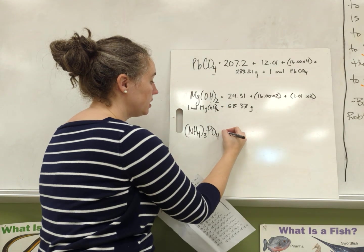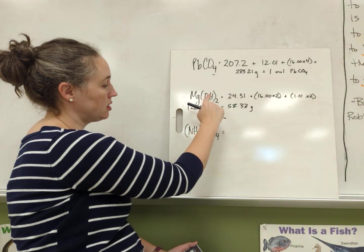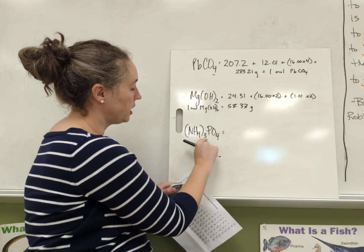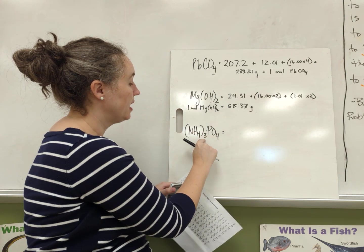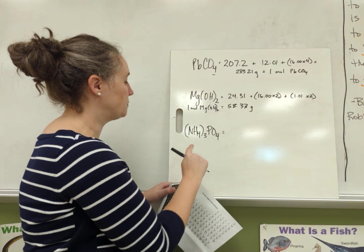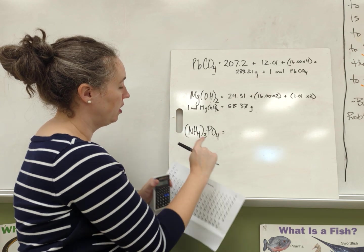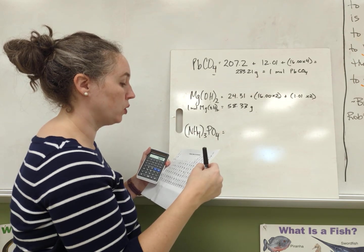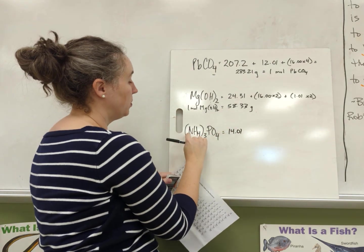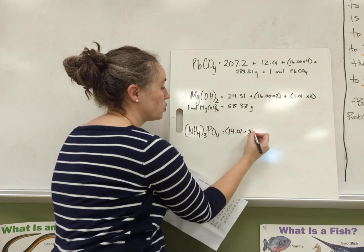Alright, now this one uses the same rules as this, but we just have to remember that we're going to distribute this 3 outside the parentheses onto every element inside the parentheses. So nitrogen, let's just find it on the periodic table, 14.01, and I'm going to multiply that times 3. This is for nitrogen.